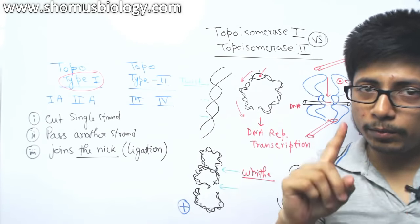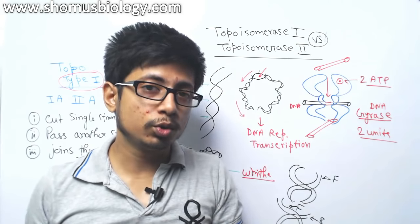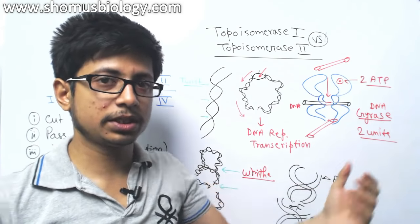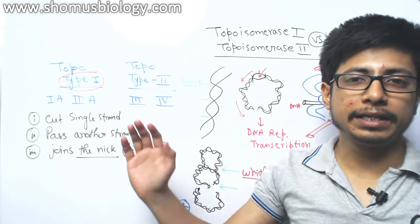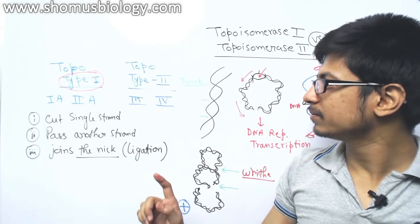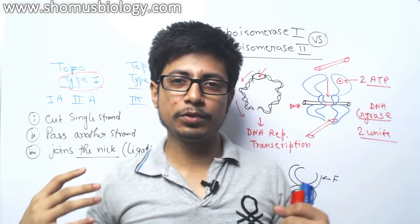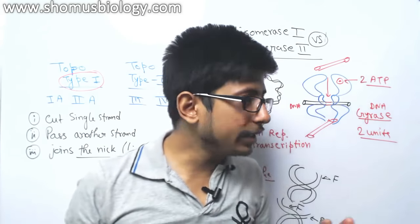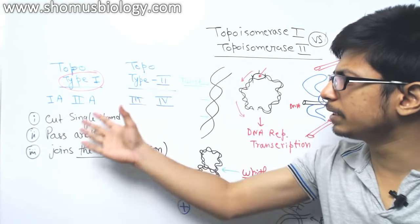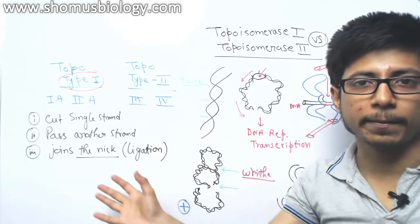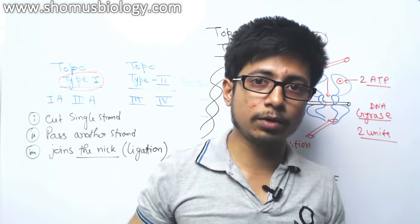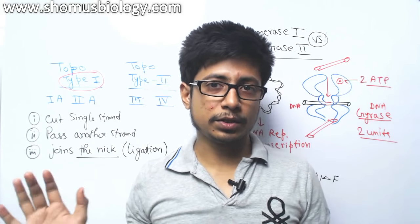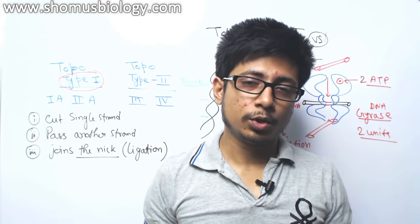So the key difference: in topoisomerase type 1, only 1 strand is cleaved; in topoisomerase type 2, both strands are cleaved. Type 2 introduces negative supercoiling by 2 units, while type 1 releases the tension of negative supercoiling by 1 unit. Type 2 also requires much more ATP compared to type 1. In this video I am not talking about the detailed mechanism, just the summary of differences. If you want to know more, I recommend watching my other separate videos on topoisomerase type 1 and type 2.